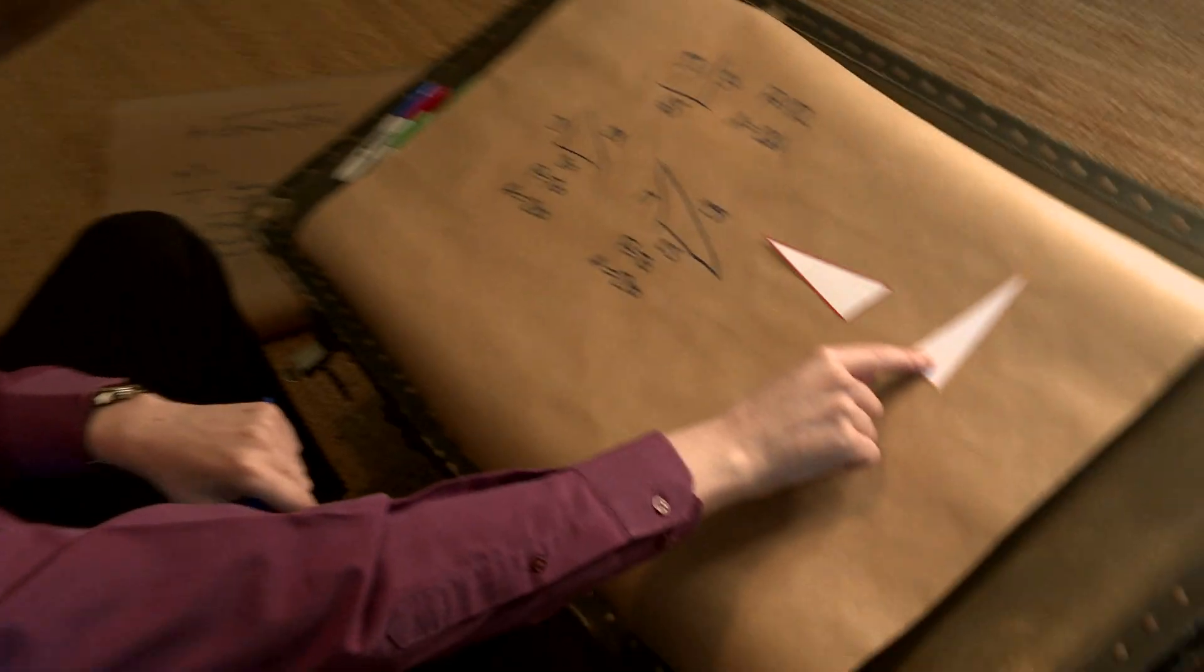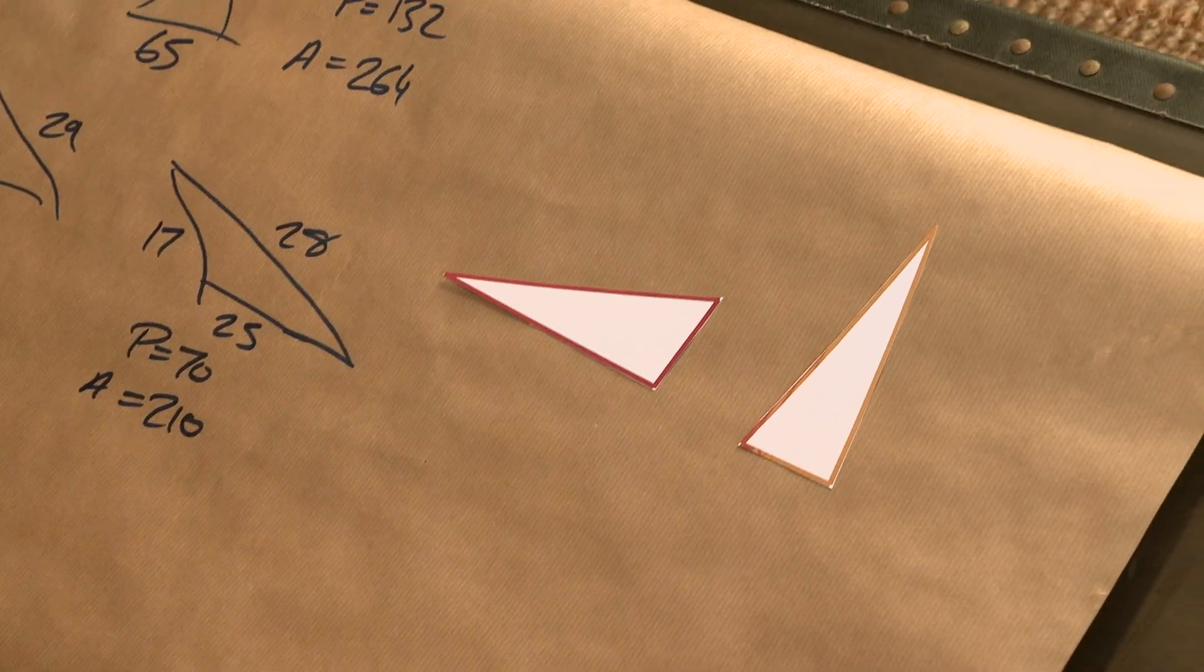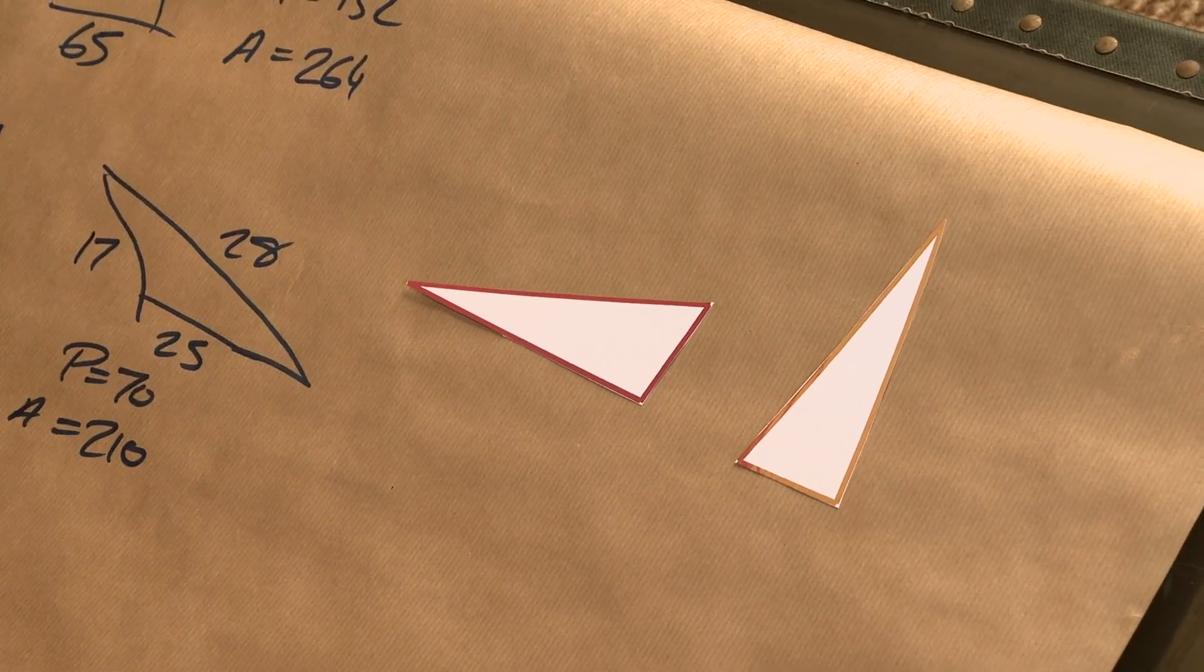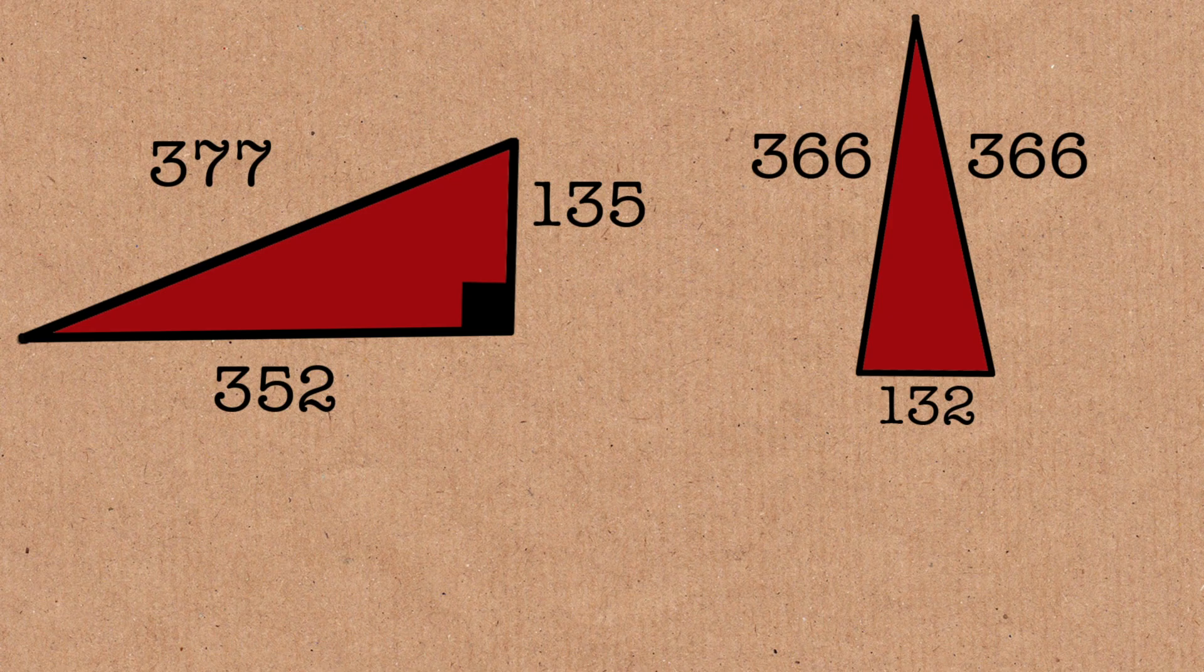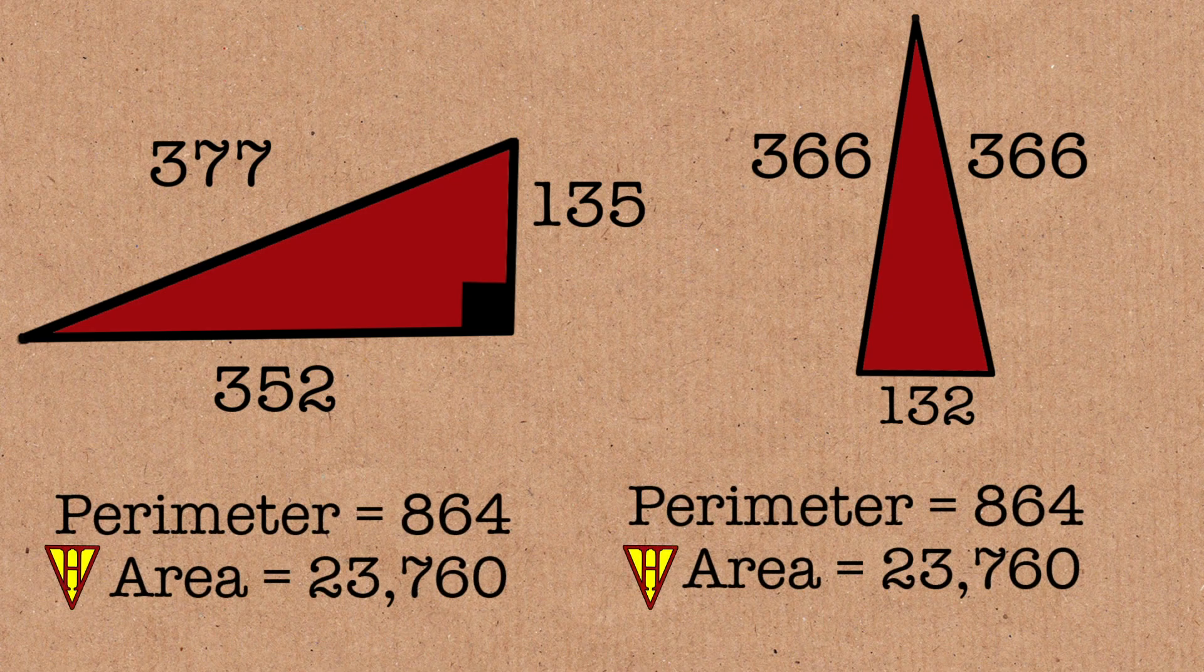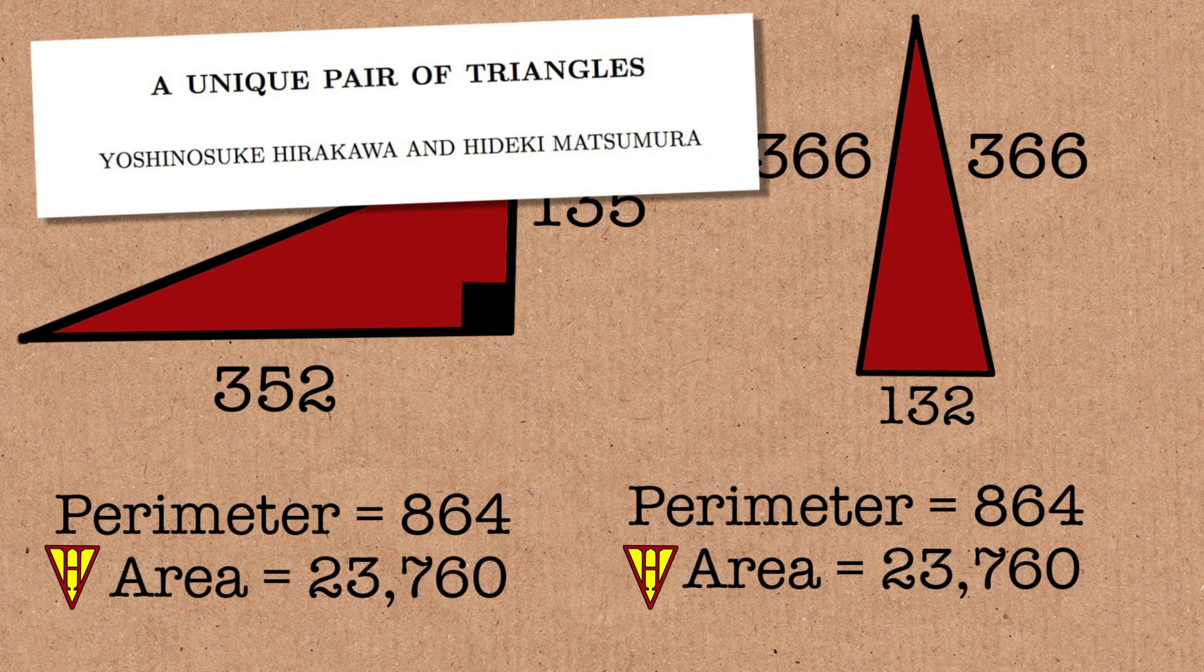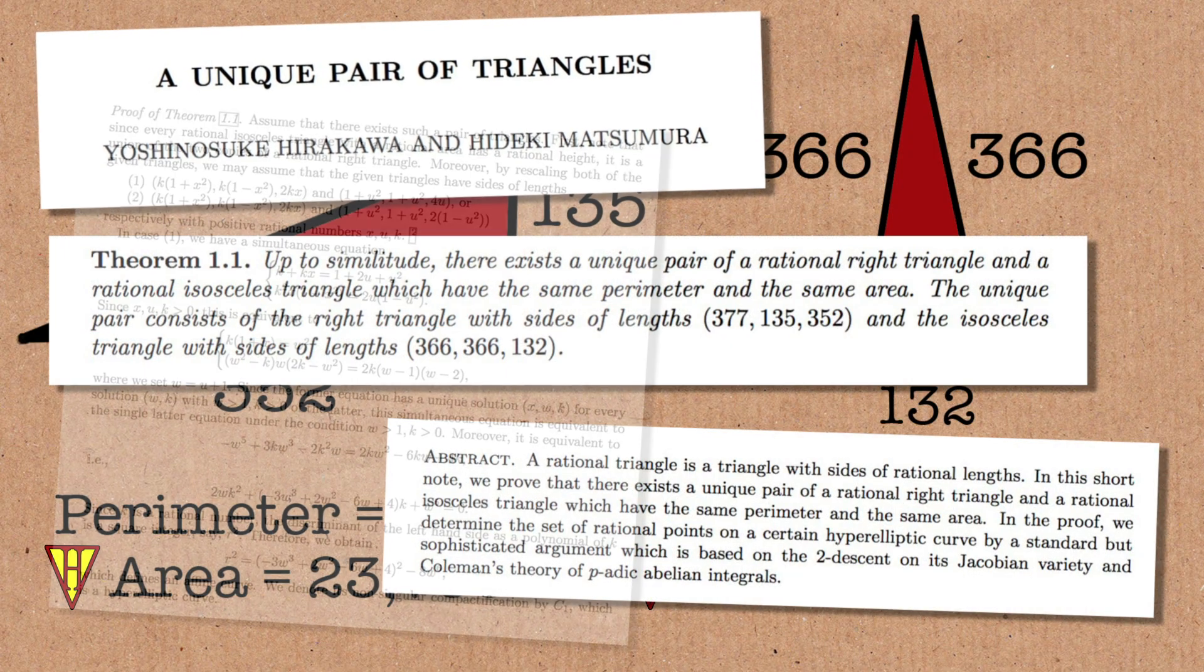But this one is special. And this pair is special and unique, because it's the only pair that has a right-angled triangle and an isosceles triangle with the same perimeter, same area. And this was proven to be the only pair in 2018.